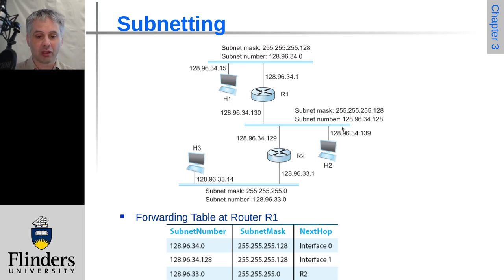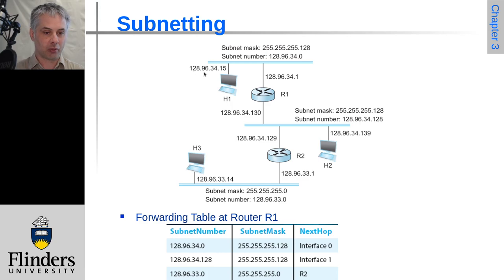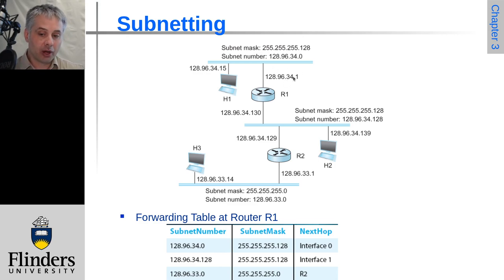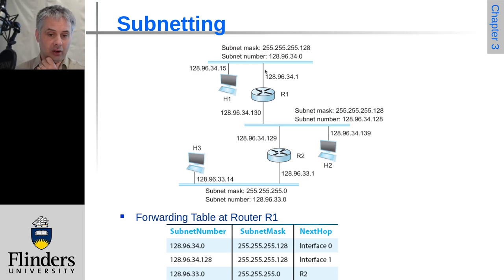It will actually be on this subnet here, which is the 128.96.34.128 subnet. It's using the same subnet mask because the size of the subnet is the same — that's really what the subnet mask lets you pick out: the size of the subnet. So we could have, for example, a host which is 128.96.34.15. Its default route might be 128.96.34.1. It's quite common to use .1, or the highest number available — like .255 — is often used as the broadcast address on IP subnets.